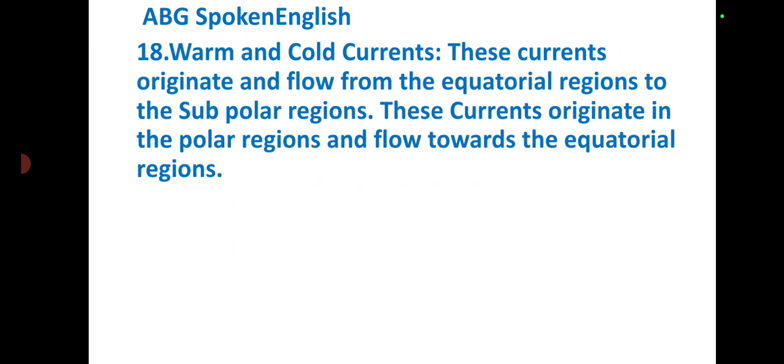Warm and cold currents: warm currents originate and flow from equatorial regions towards the subpolar regions. Cold currents originate in the polar regions and flow towards the equatorial regions.